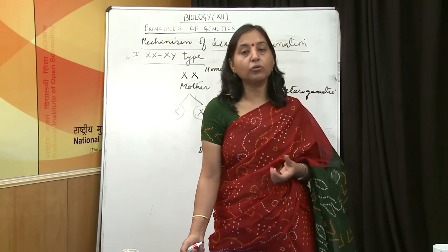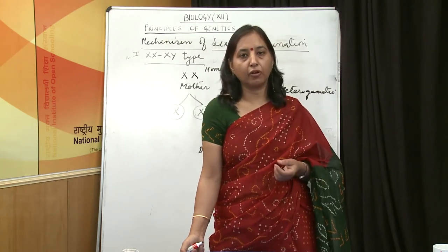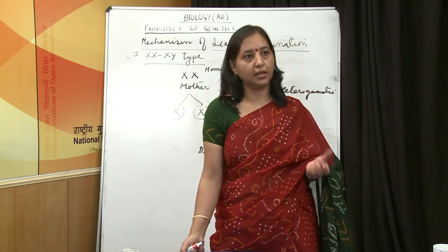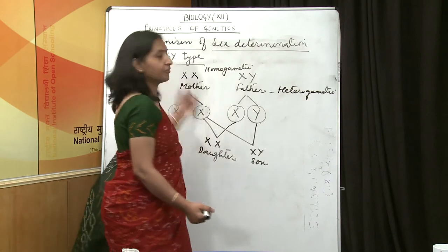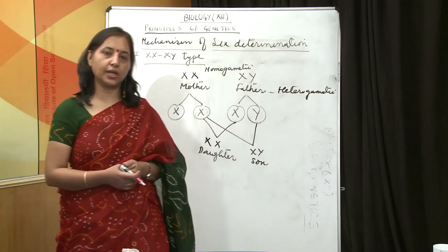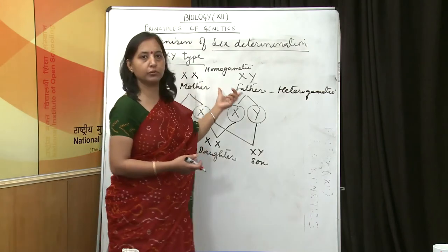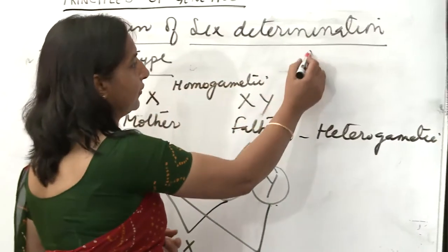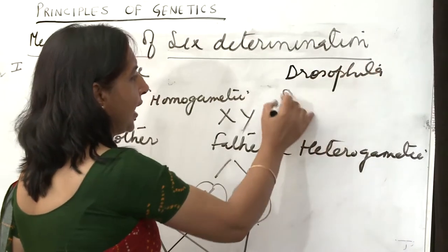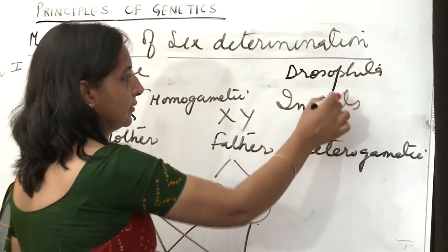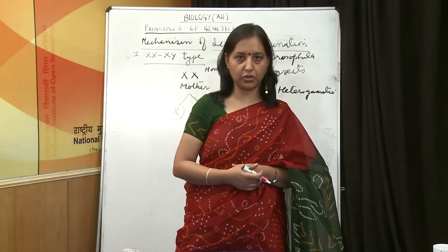So it is wrong to blame females or the mother for not bearing a son. This first type of sex determination is the XX/XY type, shown not only by human beings but also by Drosophila — the fruit fly — and most insects.